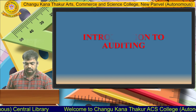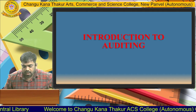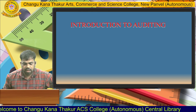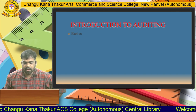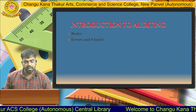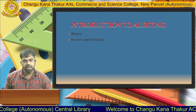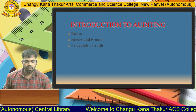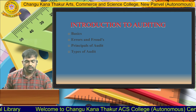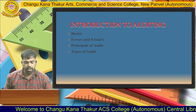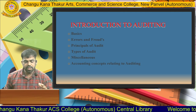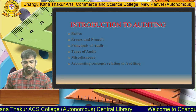There are four modules and the first module is introduction to auditing. In this module there are certain chapters: basics of auditing, second is errors and frauds of auditing covering the difference between errors and frauds, third is principles of audit covering what principles are to be followed, and the last one is types of audit, miscellaneous, and accounting concepts relating to auditing.